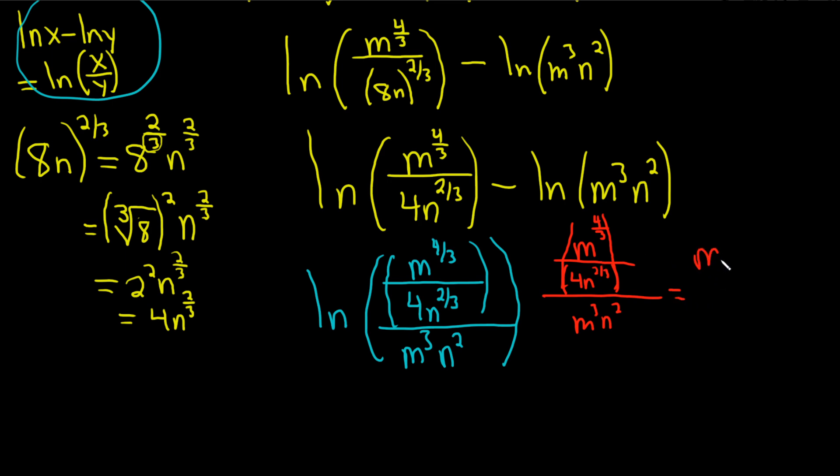So you take this, which is m to the four-thirds over 4n to the two-thirds. That's times the reciprocal of this, which is one over m cubed n squared.